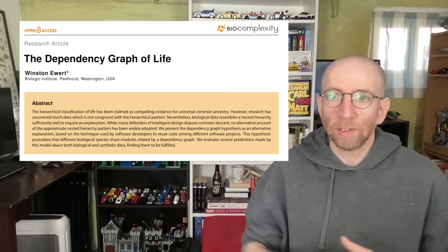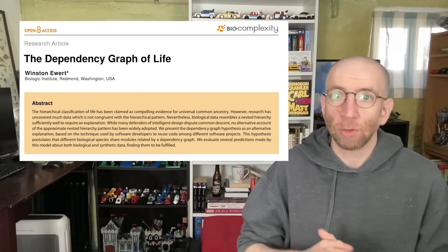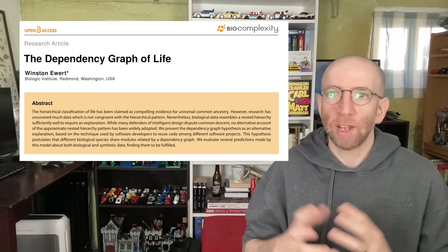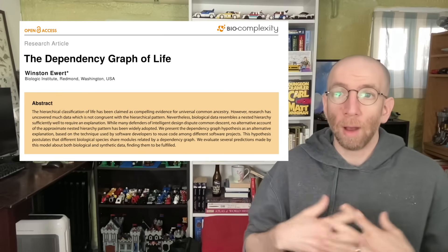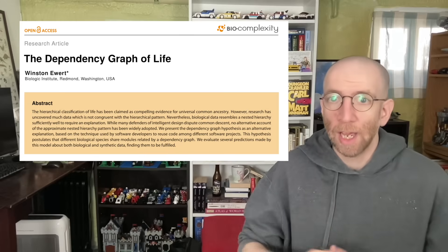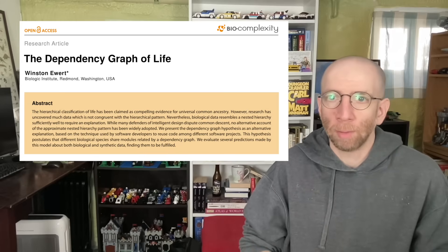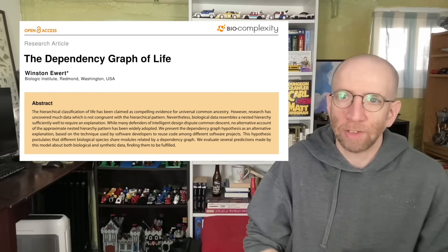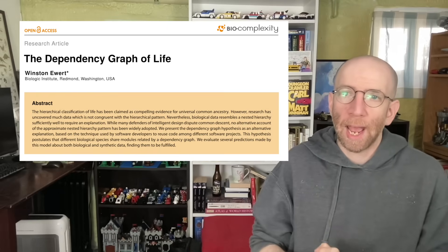I am talking about Winston Ewart's dependency graph model as an alternative to common ancestry to explain phylogenetic relationships and nested hierarchical patterns of similarity among living things. This goes back to a 2018 paper published in Discovery Institute's journal Biocomplexity, and then there was a more recent follow-up one as well.